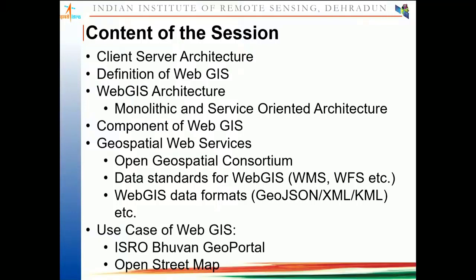We will be talking about the Web GIS architecture, and there are basically two modes: first is the monolithic, the traditional one that people used to implement Web GIS on, and the latest one is the service-oriented architecture. We will discuss the differences between these two architectures, and if time permits I will give a small demo of how you can implement service-oriented architecture for your Web GIS application. We will also talk about the different components of Web GIS.